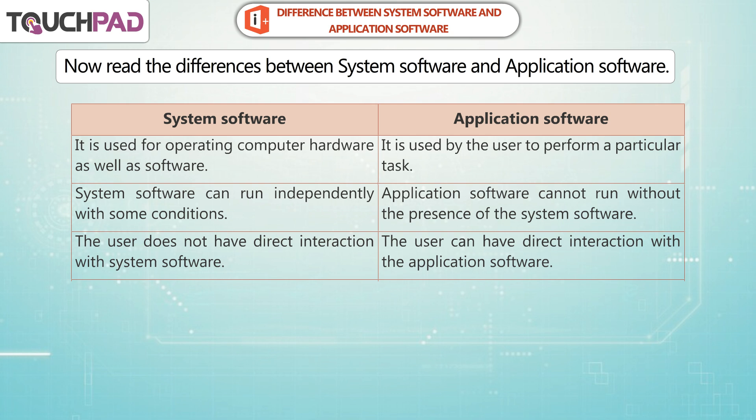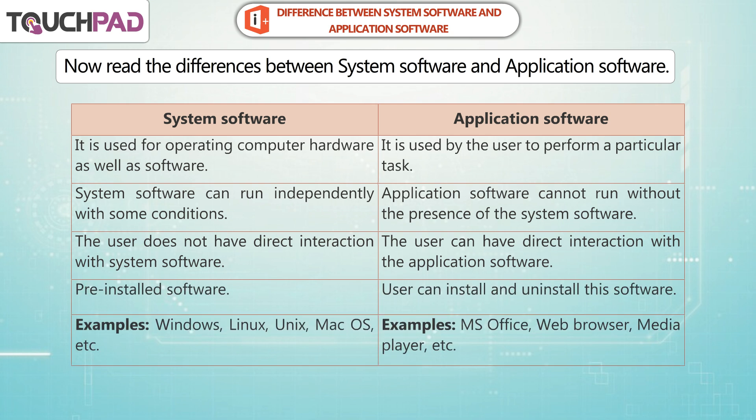The user does not have direct interaction with System Software. The user can have direct interaction with the Application Software. System Software is pre-installed, whereas the user can install and uninstall Application Software.